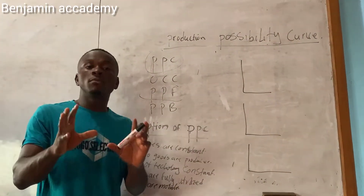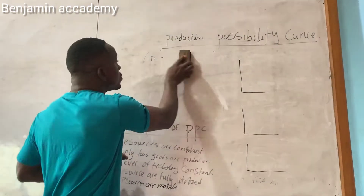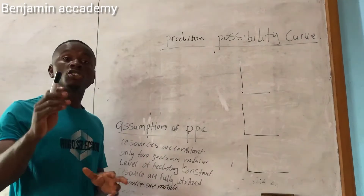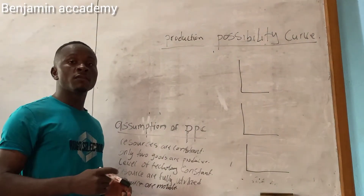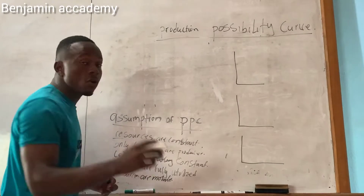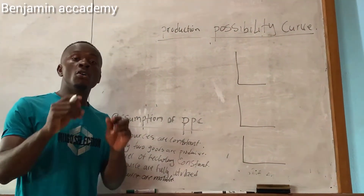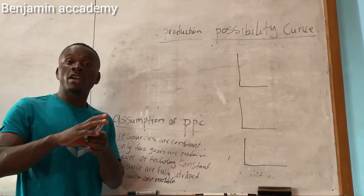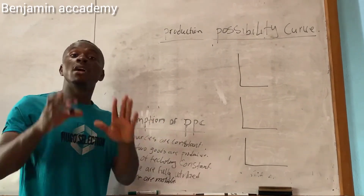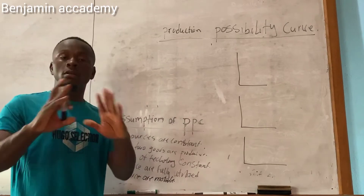We need to know the different assumptions taken into consideration when talking about the production possibility curve. The first assumption is that resources are constant — the resources used by a country producing two goods X or Y must remain constant.